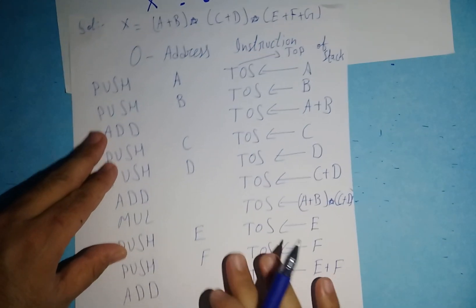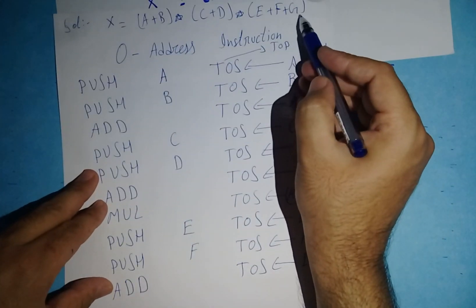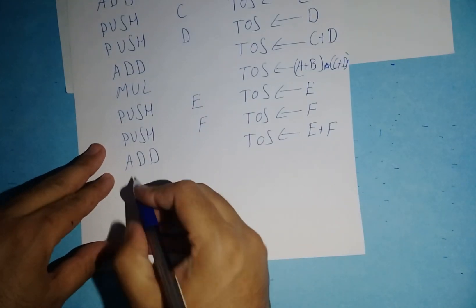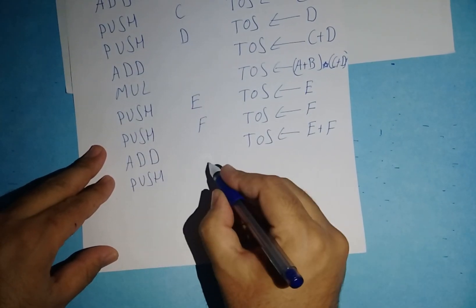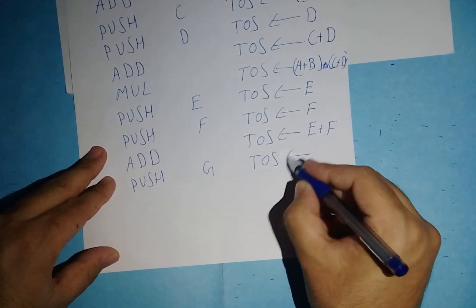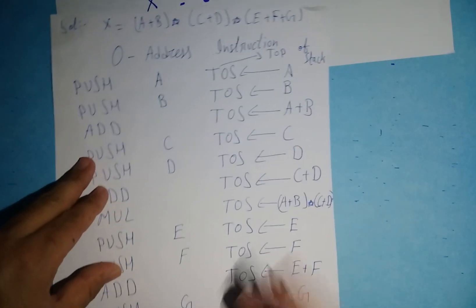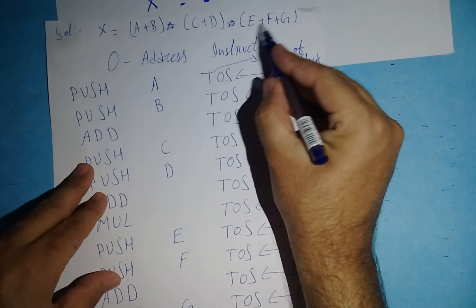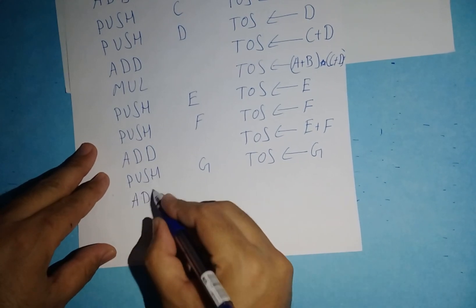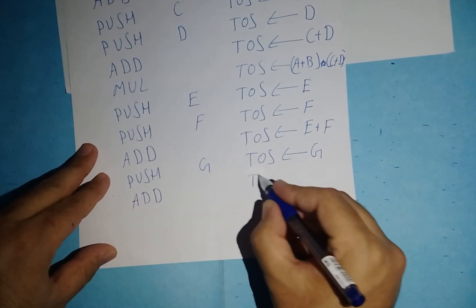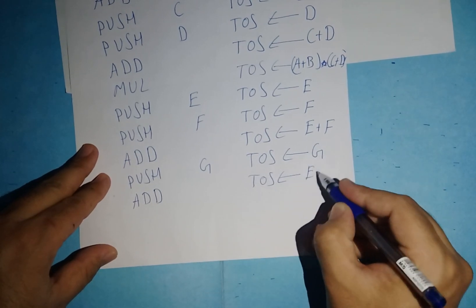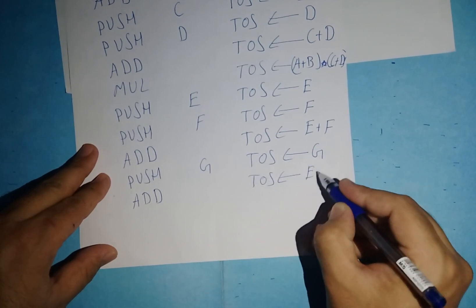I've added E + F. Now I push G, since G is the third variable in this bracket. Top of stack now holds G. G should be added with E + F, so I write ADD again. Top of stack now holds E + F + G.